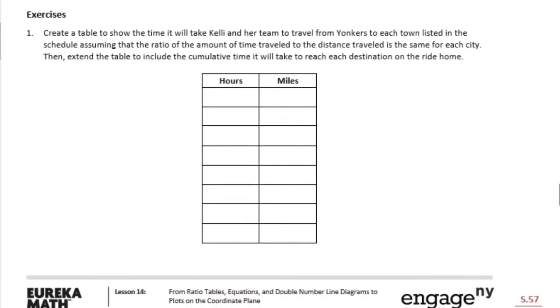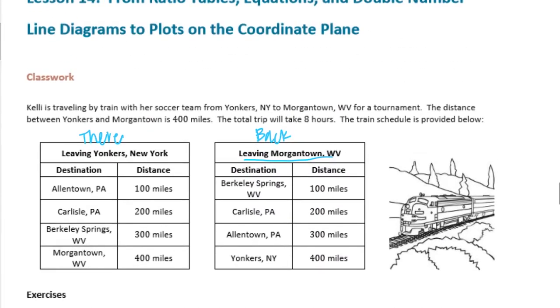Exercise 1: Create a table to show the time it will take Kelly and her team to travel from Yonkers to each town listed in the schedule, assuming that the ratio of the amount of time traveled to the distance traveled is the same for each city. Then extend the table to include the cumulative time it would take to reach each destination on the ride home.